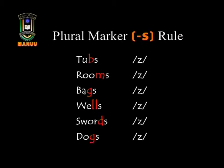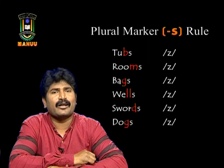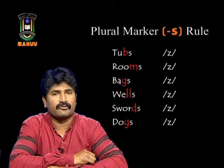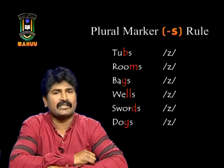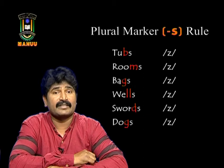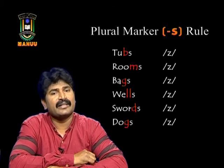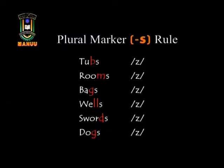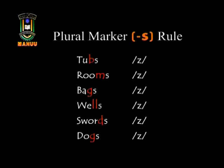Observing these examples carefully: S is preceded by /b/ (voiced) in 'tubs', /m/ (voiced) in 'rooms', /g/ (voiced) in 'bags', /l/ (voiced) in 'wells', /d/ (voiced) in 'swords', and /g/ (voiced) in 'dogs'. By looking at all these examples, wherever S is preceded by a voiced sound, you have to end with /z/, not /s/.